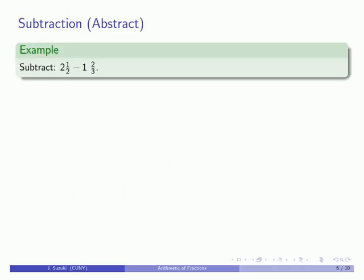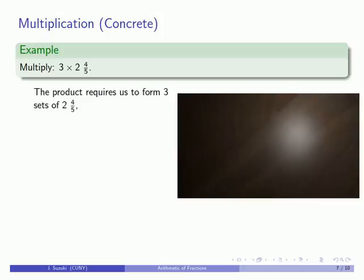For the abstract version, arithmetic is bookkeeping, and you can make your own books. For multiplication, 3 times 2 and 4 fifths. We'll start by putting down 2 and 4 fifths. We'll take a unit, cut it into 5 pieces, and take 4 of them. Our definition of multiplication says this product is formed by taking 3 sets of 2 and 4 fifths. So we'll make 3 sets.